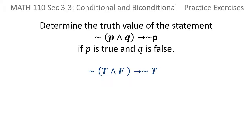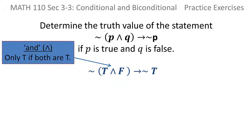Once you do that, look at the and inside the parentheses. We know that for and, it's only true if they're both true. So true and false would be false.